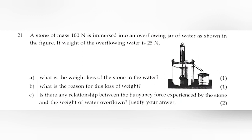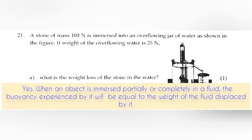Question 21: A stone of mass 100 grams is immersed into an overflowing jar of water as shown. If weight of the overflowing water is 25 grams. (a) What is the weight loss of the stone in water? Answer: weight loss equals weight in air minus weight in water. (b) What is the reason for this loss of weight? Answer: buoyancy. (c) Is there any relationship between the buoyancy force experienced by the stone and the weight of water overflowing? Justify your answer. Answer: Yes. When an object is immersed partially or completely in a fluid, the buoyancy experienced by it will be equal to the weight of the fluid displaced by it.